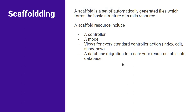First, let's understand what a scaffold is. A scaffold is a set of automatically generated files which forms the basic structure of a Rails resource. It automates the process of creating controllers, models, and views manually. However, it only comes with some standard controller actions, standard form fields and views, and a standard model structure.